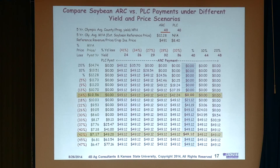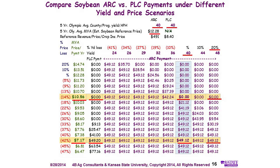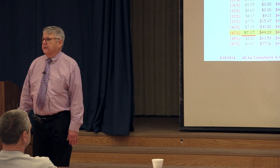Here's the soybean number — same story. With an average county yield, it's going to trigger around $10.56 based on current prices. As the price comes down, it takes about a price of around $7.17 before PLC pays more, assuming the county has an average yield. If the county has above average yields, that can cut into the ARC payment. For planning purposes, you're looking at a number approaching $7 on soybeans before it will favor PLC over ARC. That's why I said, under soybeans, ARC is most likely to pay, as opposed to PLC.